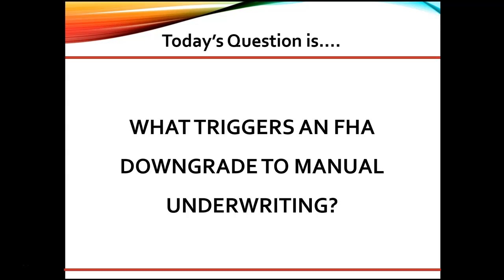Any of the following items will require a downgrade to manual underwriting, even if you receive positive AUS results. There is data that cannot be entered into DU or LP, or data used that is found to be inaccurate. The borrower has $1,000 or more in collective disputed derogatory credit accounts. The date of the case number assignment is within two years from the date of the bankruptcy discharge, or three years from the date of a short sale, deed in lieu, or foreclosure.